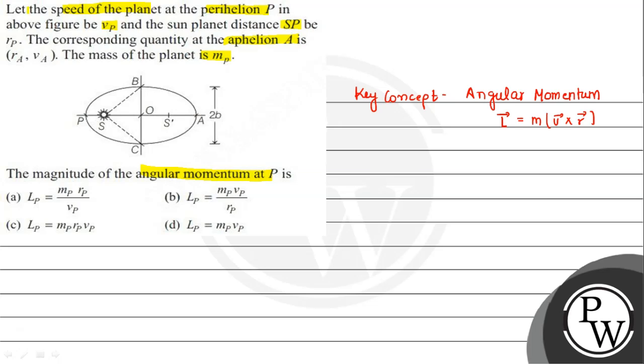So basically, mass of planet - how much? mp. And we have velocity vp. And we have distance between sun and planet, rp. Now we will put it in the formula.